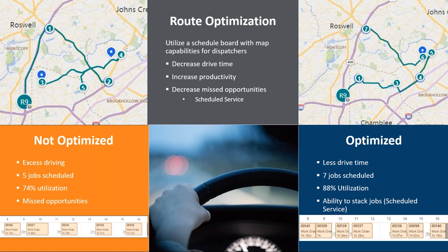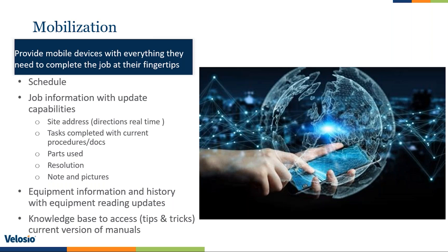The mobile app gives technicians the ability to complete the job at their fingertips: the ability to see their schedule and what they have coming up, job information with update capabilities like site address with directions in real time, tasks completed with current procedures and documents. How many times do you send a tech out and find out they completed paperwork that's two versions out of date — you're out of compliance. Parts and resolutions help you dictate your skills. Notes and pictures can be added. Then you have equipment information with history and equipment reading updates — if you're tracking hours or pressure gauges, having that at their fingertips so they can see the previous history.